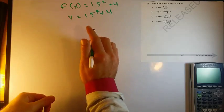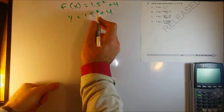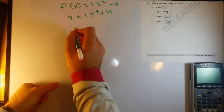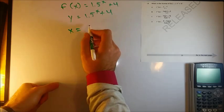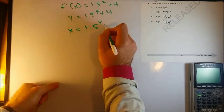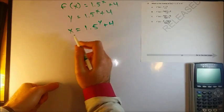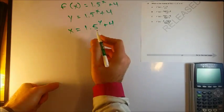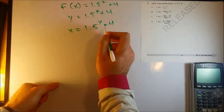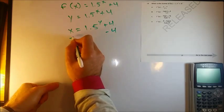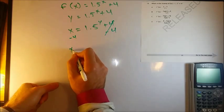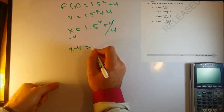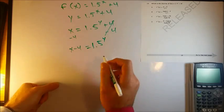Then I'll flip my x and y. I'll flip the positions that they're in. So this will become x equals 1.5 to the y plus 4. Now I just got to solve for y. So x equals 1.5 to the y plus 4. I'll just subtract 4 from both sides. I get x minus 4 equals 1.5 to the y.